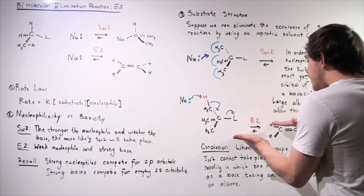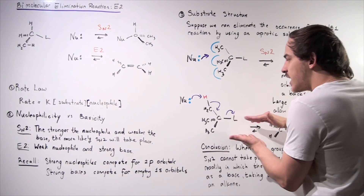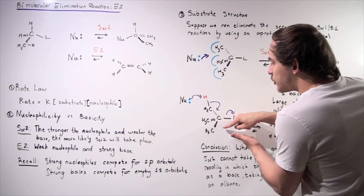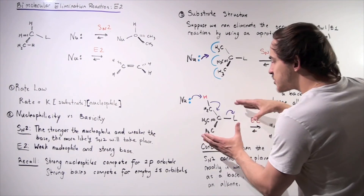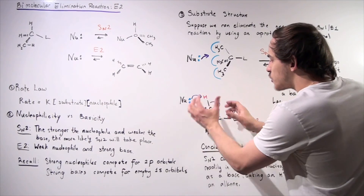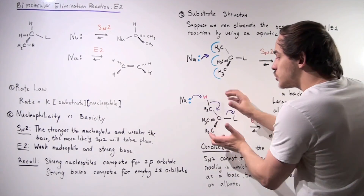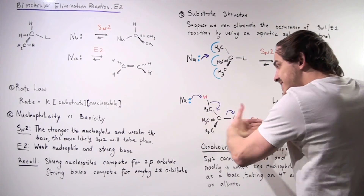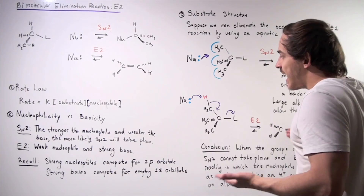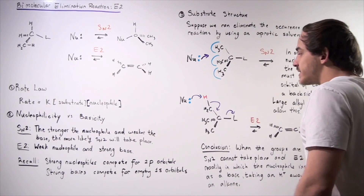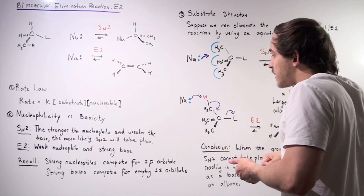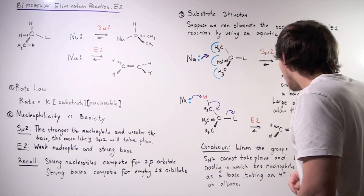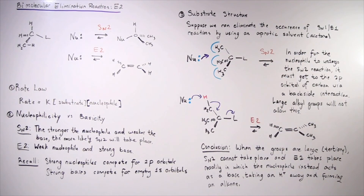Once again, the E2 reaction readily takes place because this is very sterically hindered. You can't get to the carbon because of all the electrons moving around — a lot of electrostatic repulsion on these carbons. So instead, they approach this H atom on top and go via the E2 pathway, forming our double bond and our alkene.